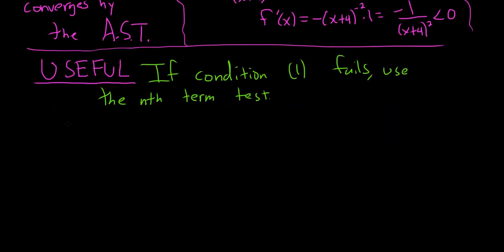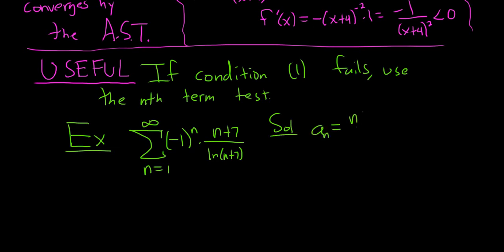Let me go ahead and do an example just to show you because this is really useful. Let's say you have the infinite sum as n goes from 1 to infinity, negative 1 to the n times n plus 7 over the natural log of n plus 7. Let's say, what is going on? Craziness. So if you try to use the alternating series test, like say you tried to do it, you would set a sub n equal to n plus 7 over the natural log of n plus 7. That would be your first step. And then as before, you would go through your steps. You would say, okay, step 1, take the limit as n goes to infinity of n plus 7 over the natural log of n plus 7. I think I typo there, it's a 7.